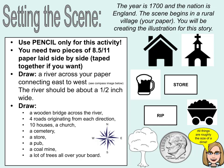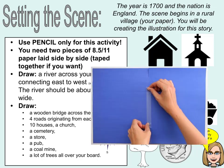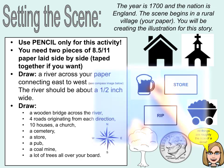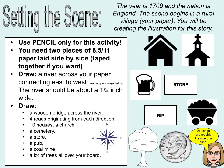The year is 1700 and the nation is England. Our scene begins in a rural village — in this case, this will be your paper. For this activity you will need only a pencil. You will also need two pieces of eight and a half by eleven paper laid side by side. This could be printer paper or regular notebook paper taped side by side. To begin, you are going to set up your village that we are going to add to throughout this game.